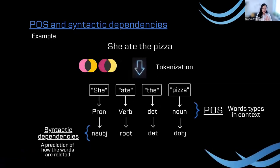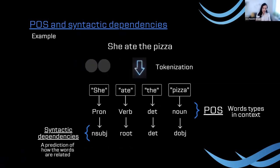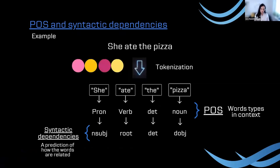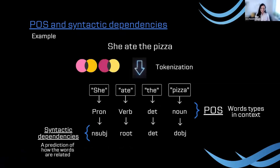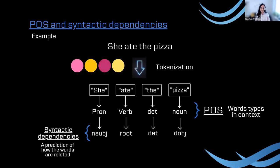There's a second layer: syntactic dependencies, which means a prediction of how words are related. POS and syntactic dependencies together offer a complete way of analyzing words, all happening in context. This is the most basic and essential knowledge of NLP you need to start understanding what is happening behind the process of processing text with NLP.